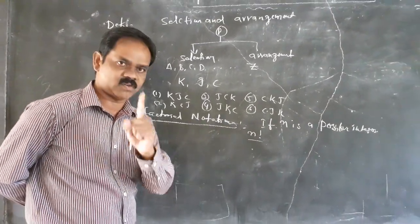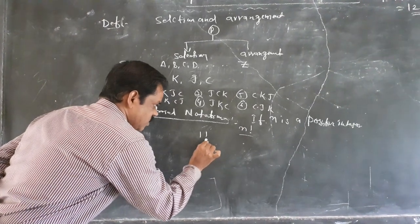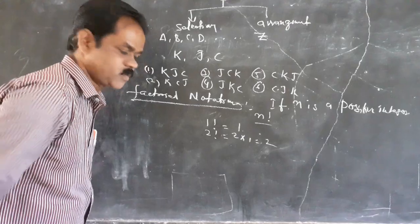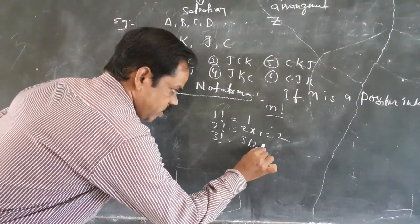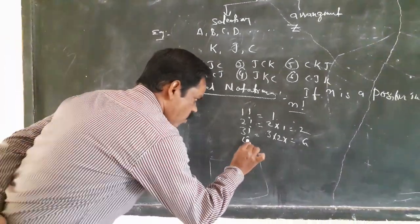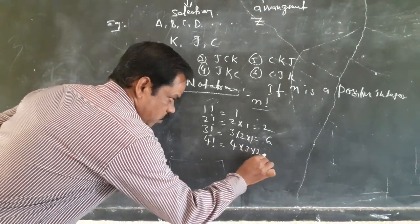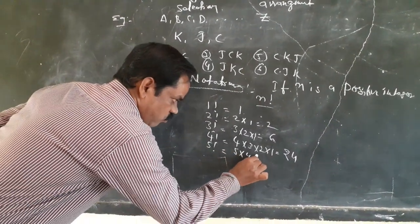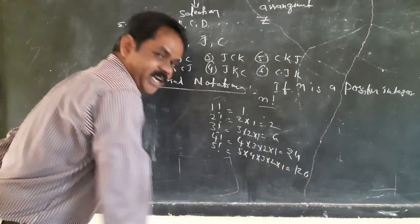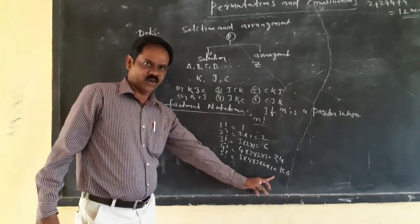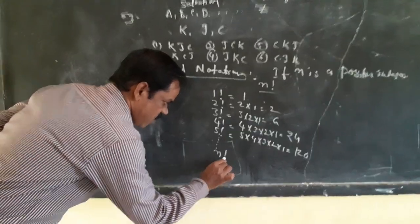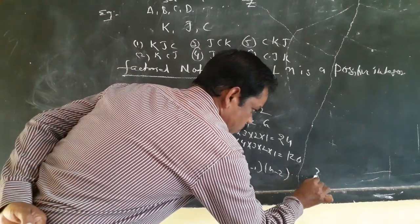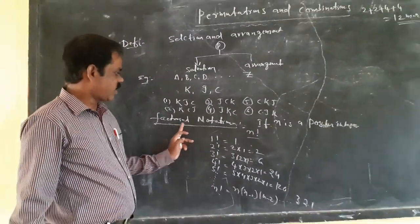Suppose n equals 1, then 1 factorial equals 1. Next, 2 factorial equals 2 × 1 equals 2. Next, 3 factorial equals 3 × 2 × 1 equals 6. Next, 4 factorial equals 4 × 3 × 2 × 1 equals 24. Next, 5 factorial equals 5 × 4 × 3 × 2 × 1 equals 120. In general, n factorial equals n × (n−1) × (n−2) × … × 2 × 1.